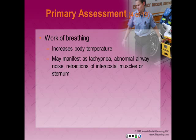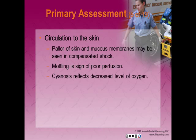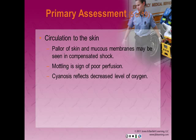Work of breathing increases as the body attempts to compensate for abnormalities in oxygenation and ventilation. Increased work of breathing may manifest as tachypnea, abnormal airway noises, and retractions of the intercostal muscles or the sternum. For circulation to skin: when cardiac output fails, the body shunts blood from areas of lesser need, such as the skin, to areas of greater need, such as the organs. Pallor of the skin and mucous membranes may be seen in compensated shock, and may also be a sign of anemia or hypoxia. Cyanosis reflects decreased oxygen in the blood and is a late sign of respiratory failure or shock. Never wait for the development of cyanosis before administering oxygen.